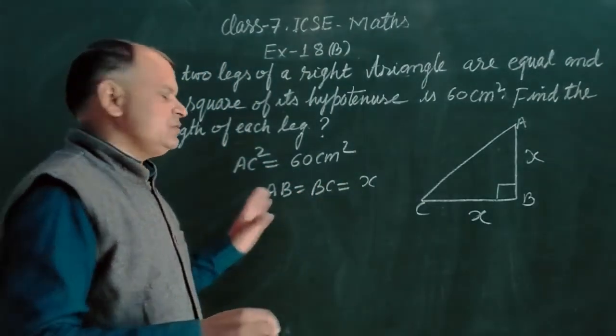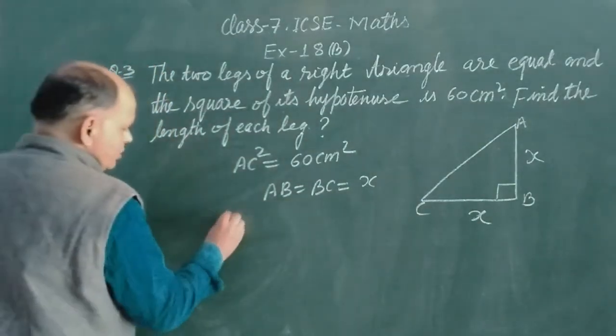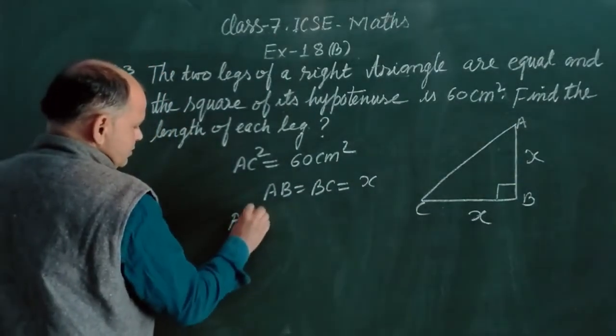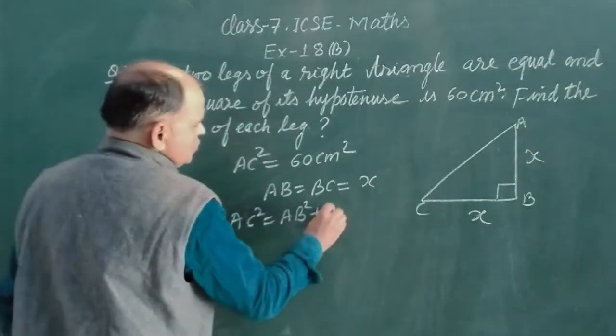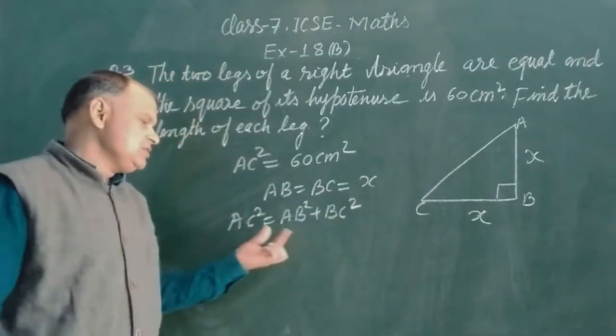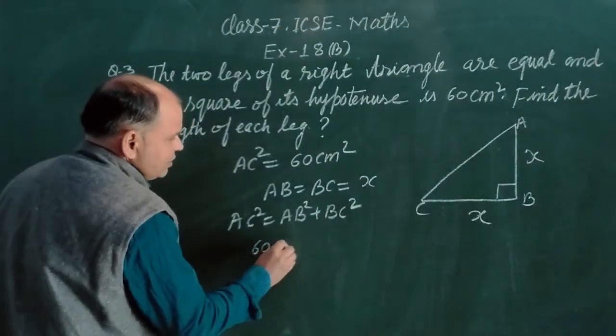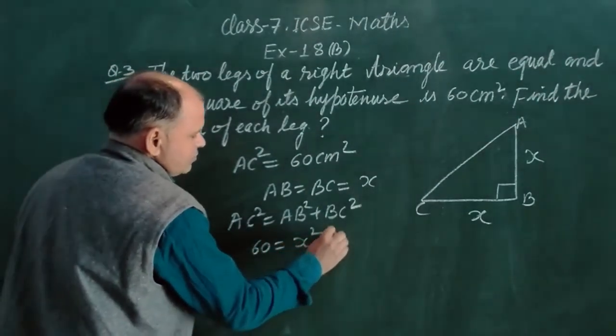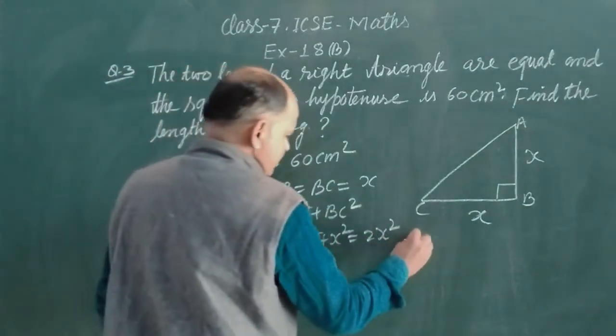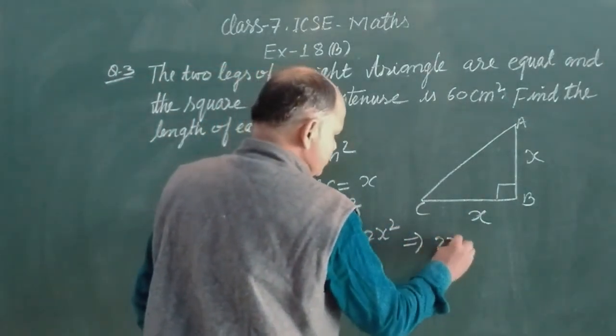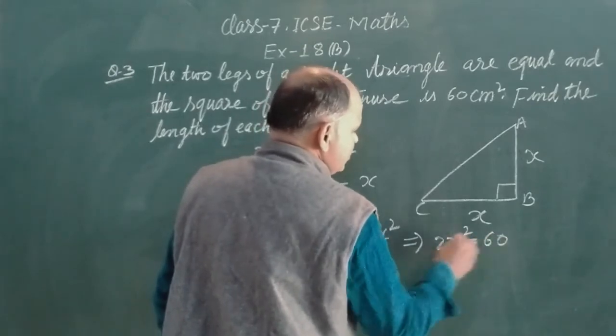And AC square is given 60 cm square, and AB equal to BC which is like x. So this is x, this is x, and we want AB, AC, and BC.